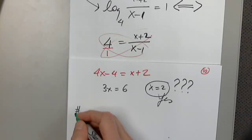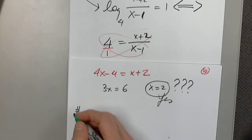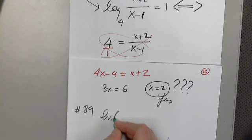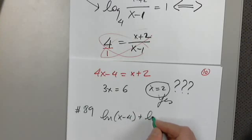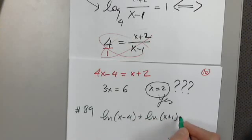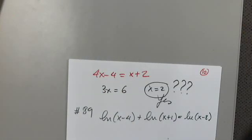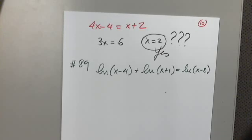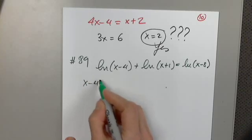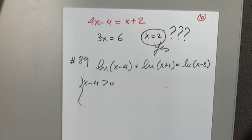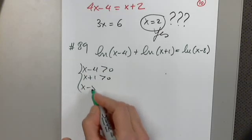Very good. So let's look at 89. Natural log of x minus 4 plus natural log of x plus 1 equals natural log of x minus 8. How many functions? How many log functions we see in this equation? So three conditions then. For the first one. For the second one. Awesome. And for the last one.